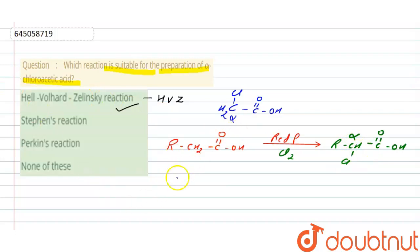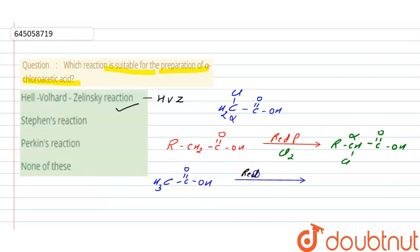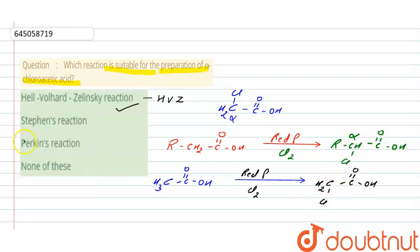Applying this to option A: acetic acid (CH3-COOH), when treated in the presence of red phosphorus and Cl2, gives CH2Cl-COOH, which is alpha-chloroacetic acid. This confirms that option A is the correct answer.